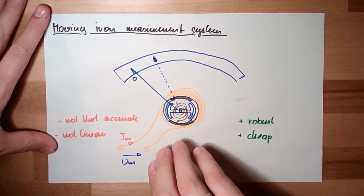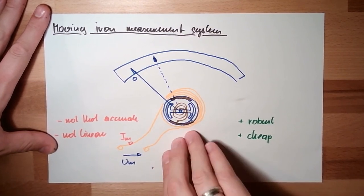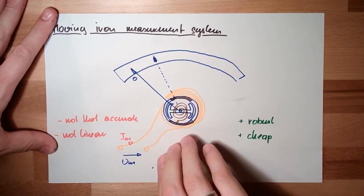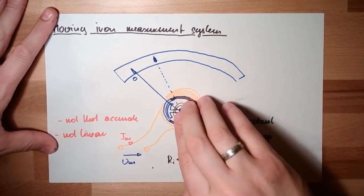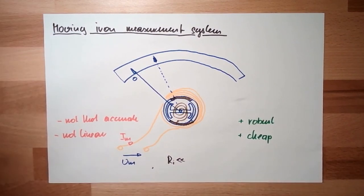So this thing here can measure AC directly. You do not need a rectifier to measure AC. If it's a sinusoidal AC, it will even measure the effective value. So that's also interesting.